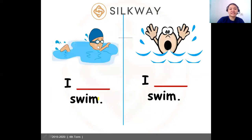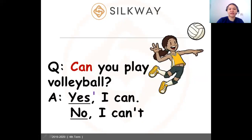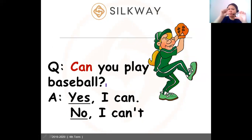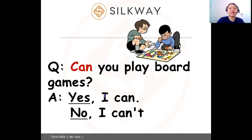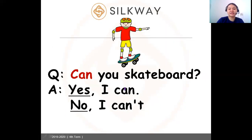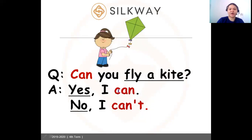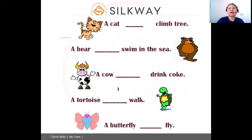Let's continue. Can you swim? You can say: I can or I can't swim. Can you play volleyball? Yes, I can. No, I can't. Can you play baseball? Yes, I can. No, I can't. Can you play board games? Yes, I can. No, I can't. Can you rollerblade? Yes, I can. No, I can't. Can you skateboard? Yes, I can. No, I can't. Can you jump rope? Yes, I can. No, I can't. Can you fly a kite? Yes, I can. No, I can't.